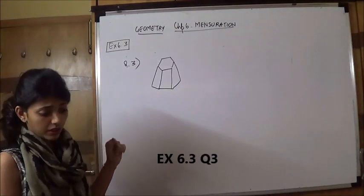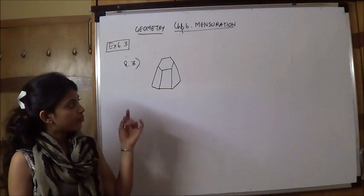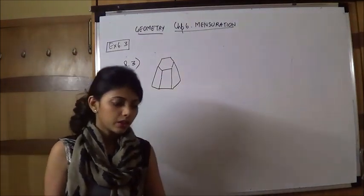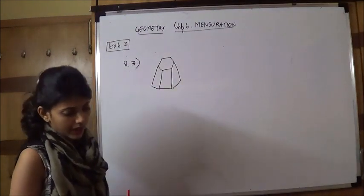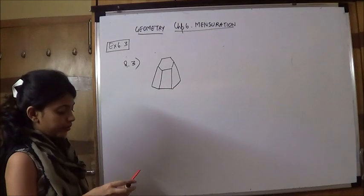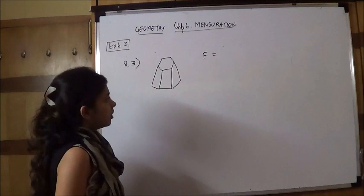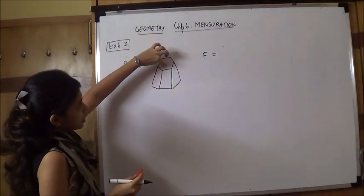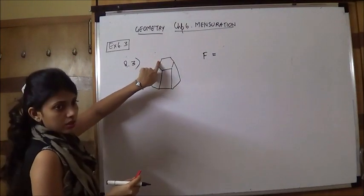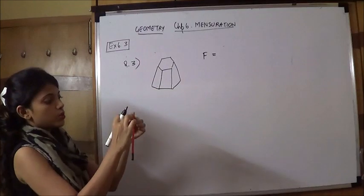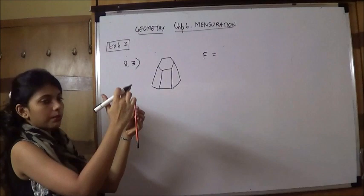Next question 3. We are given certain polyhedrons and we are required to verify Euler's formula. That is, you have to prove that F plus V is equal to E plus 2, and definitely it will always be equal. So your first diagram is this. We have to find out F, V and E. So F is the number of faces. What are the faces? There is 1 in the top and 1 in the base, and how many sides are there? 1, 2, 3, 4, 5, 6. So vertically there will be 6 faces. 6 plus 1 plus 1, that is 8.